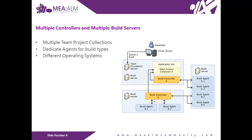In this topology, we have multiple controllers and multiple build servers. What's shown in this diagram is that you have multiple controllers but they're still targeting the same team project collection. The only time you'll need multiple controllers for one team project collection is if your controller is consuming a lot of memory and you don't want to consume all the resources on that machine — so you distribute your build controllers so that memory consumption is spread between two or more servers.